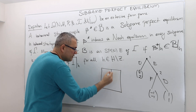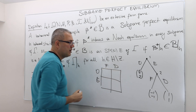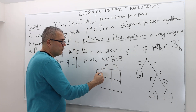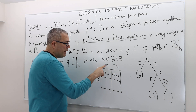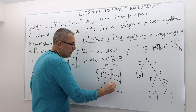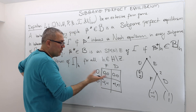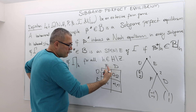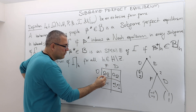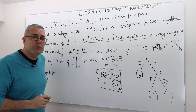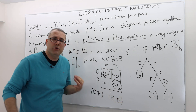Player one has two strategies: stay out or enter. Player two also has two strategies: fight or don't fight. In the strategic form game representation, if player one chooses Out, it doesn't matter what player two does. But if he enters, then depending on player two's choice, the payoffs will be either minus one, minus one, or plus one, plus one. In pure strategies, both of player two's strategies are best responses to Out, but only Don't Fight is the best response to Enter. So there are two pure strategy Nash equilibria: the strategies Out-Fight and Enter-Don't Fight.